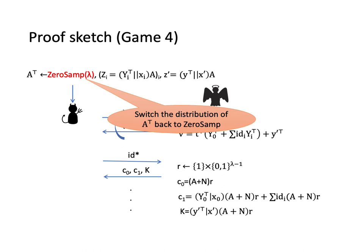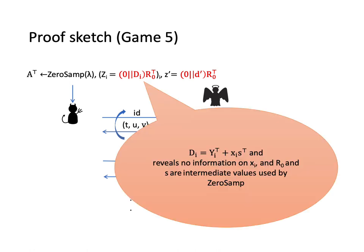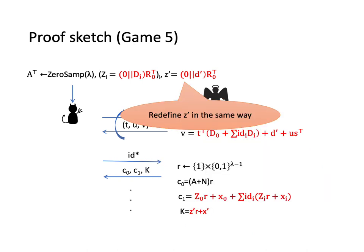In game 5, which is the last game, we do not use the randomness Yᵢ and the secret Xᵢ to generate Zᵢ anymore. Instead, we generate Zᵢ as 0-DᵢR₀ᵀ. Dᵢ is equal to Yᵢᵀ plus XᵢSᵢᵀ and it reveals no information on Xᵢ. And R₀ and Sᵢ are intermediate values used by 0-SAMP and they are independent with Yᵢ and Xᵢ. Also, we can redefine Z' in the same way.